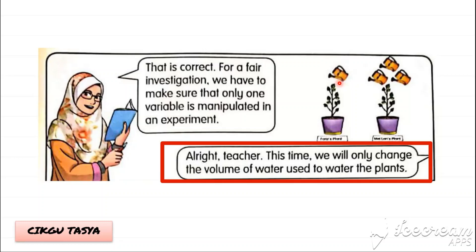Now what about the Constant Variable? We also have to make sure that the other variables remain constant — meaning they stay the same. For example, the amount of sunlight, the type of soil, and the quantity of soil for the plants are all the same. The variables that remain constant are called Constant Variables. Constant Variable is a variable that remains constant in the experiment.